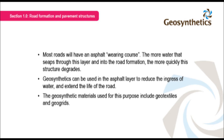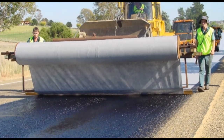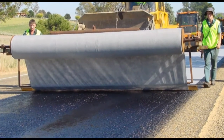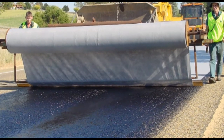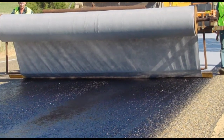Most roads will have an asphalt wearing course. The more water that seeps through this layer and into the road formation, the more quickly this structure degrades. Geosynthetics can be used in the asphalt layer to reduce the ingress of water and extend the life of the road. The geosynthetic materials used for this purpose include geotextiles and geogrids. The surface of the road needs to resist the wear and tear of traffic movements over a long period of time, and geotextiles or geogrids are often used to provide a more durable surface — meaning the roads do not need to be resurfaced and maintained so frequently.